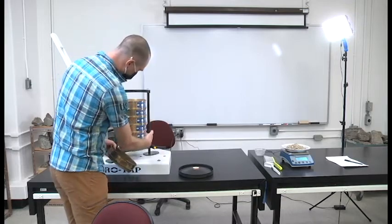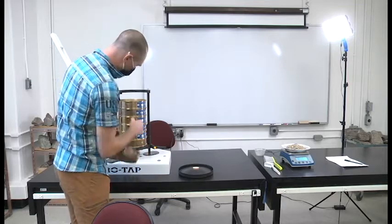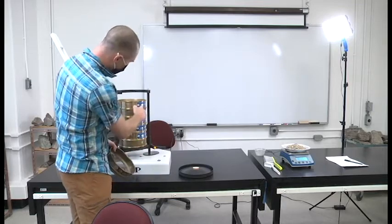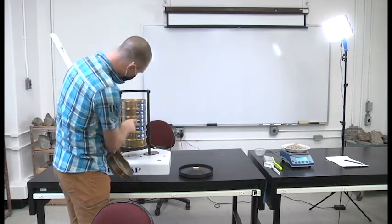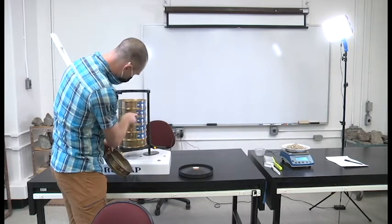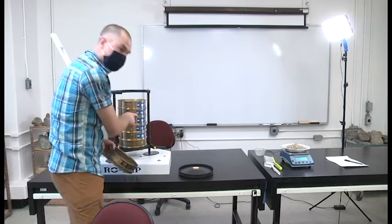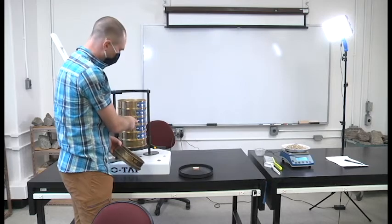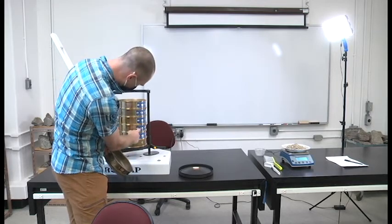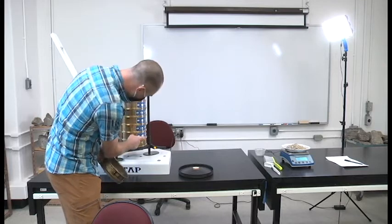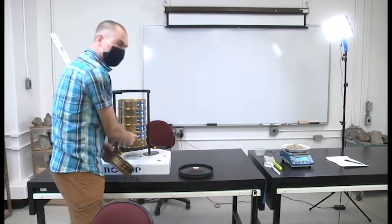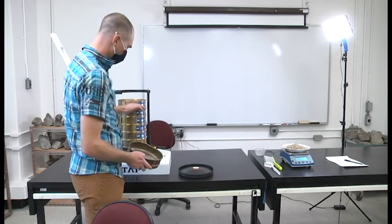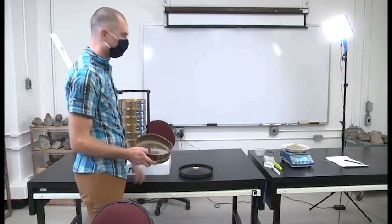As the sieve number increases, the particle size decreases. Number 4 is 4.75 millimeter. Number 18 is 1 millimeter particles. Number 40 is 0.425 millimeter particles. Number 60 is 0.25 millimeter. Number 120 is 0.125 millimeter. And number 200 is 0.075 millimeter. The particle size decreases as it goes down the stack.